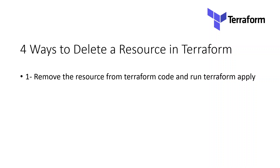The first way is to remove the resource from Terraform code and then run Terraform apply. As you know, Terraform runs on the principle of matching the desired state with the current state. So if we change the resource in the desired state, Terraform will try to reflect that in the current state. The desired state means the code we have written in Terraform, and the current state means what is exactly running on the destination, such as AWS cloud or Azure cloud.